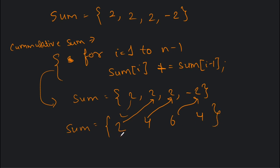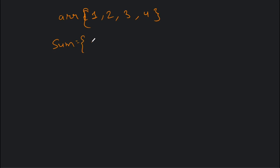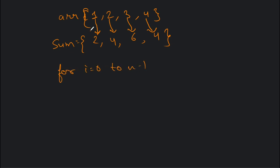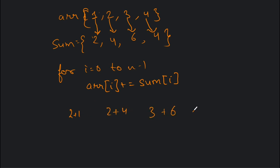The cumulative sum array [2, 4, 6, 4] tells us that elements were increased by 2, 4, 6, and 4 respectively. Adding element-by-element to the original array — for i = 0 to n-1: arr[i] += sum[i] — gives: 1+2=3, 2+4=6, 3+6=9, 4+4=8. So the final answer is [3, 6, 9, 8], which matches our expected result.